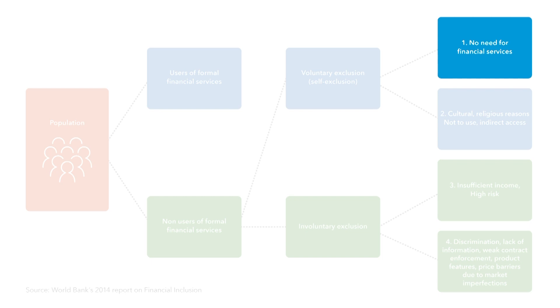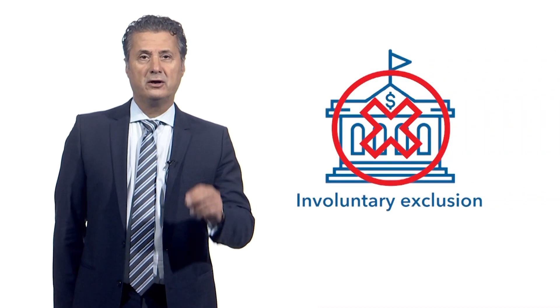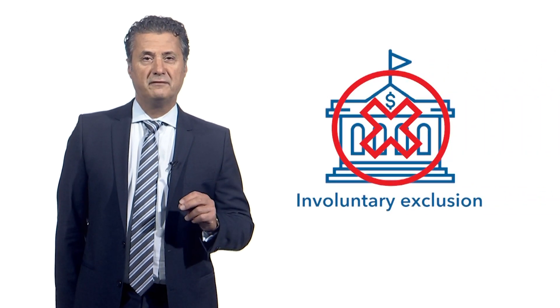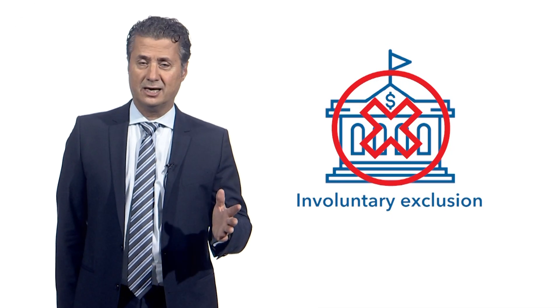See the next unit on remittances. Another reason for voluntary exclusion could be a lack of trust or understanding of financial services. The main policy arena will be in voluntary exclusion — those individuals and firms that would like to use financial services but cannot.